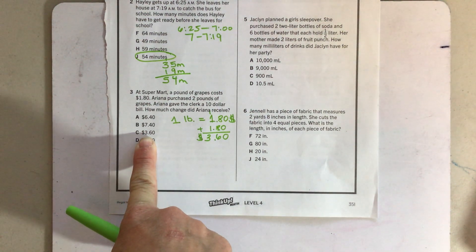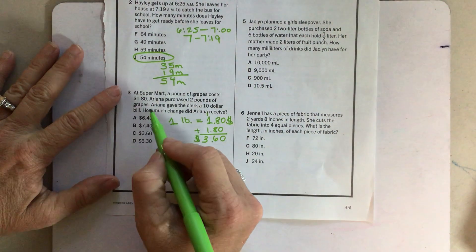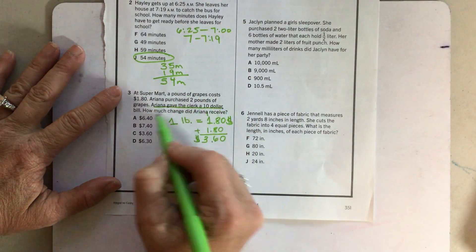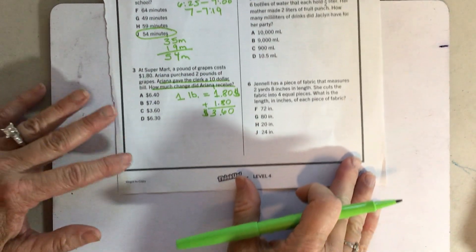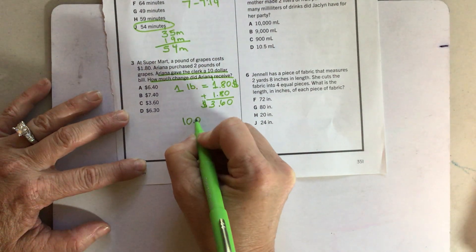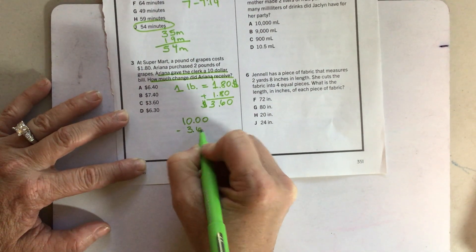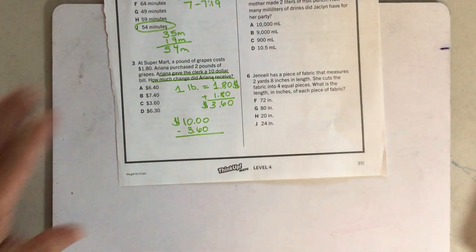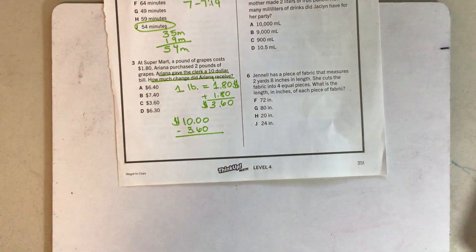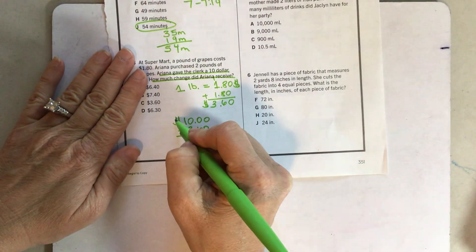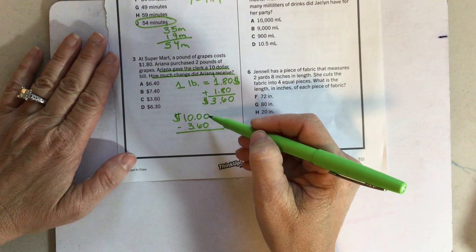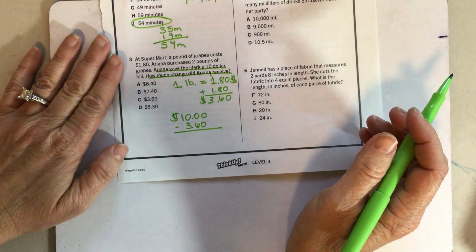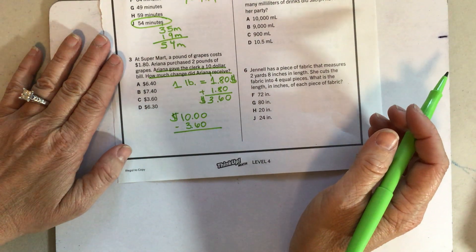Notice that answer choice is there. But that is not what they're asking. They didn't ask us how much money did she spend. They're asking us if she gives the clerk $10, how much change will she get? And this is what I'm talking about with my DMP. We have to take $10 and we have to subtract $3.60. This is one of those problems with lots of zeros. Why don't you pause the video, do your subtraction and see how you do.